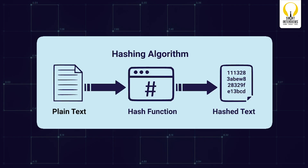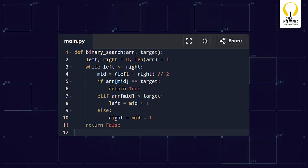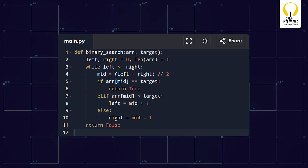For finding duplicates, instead of checking each and every element, we can use hashing libraries and find duplicates quickly. Instead of searching linearly in a sorted array, we can use binary search and reduce the search space each time. You can refer to this Python code shown on the screen.